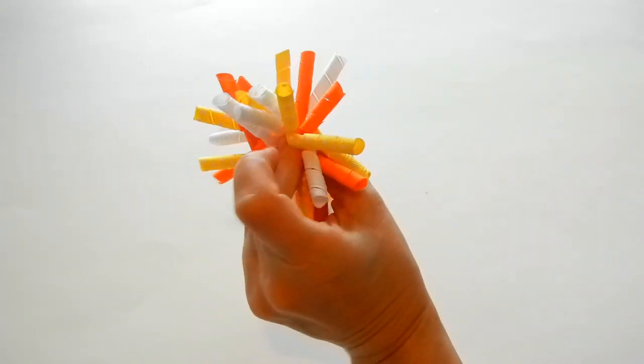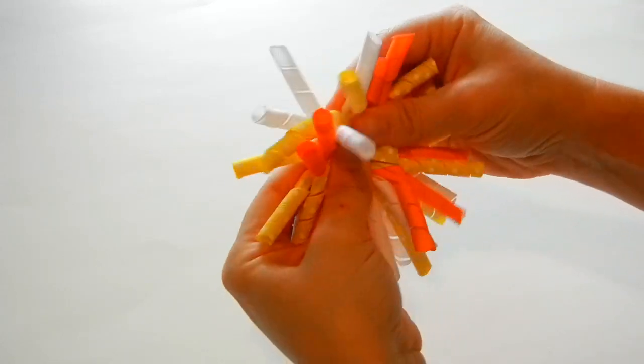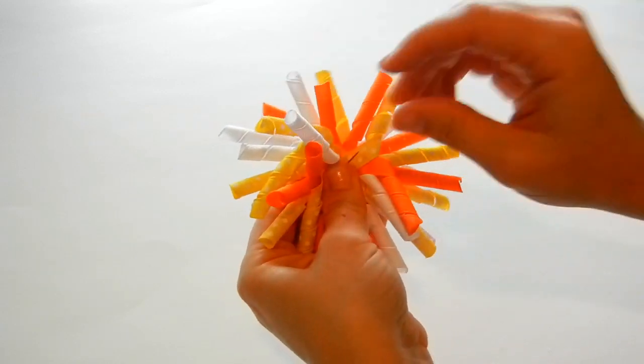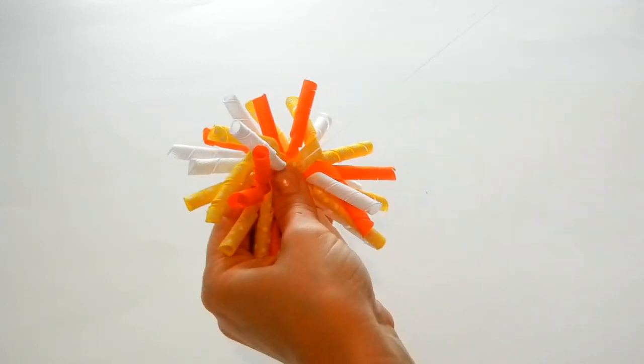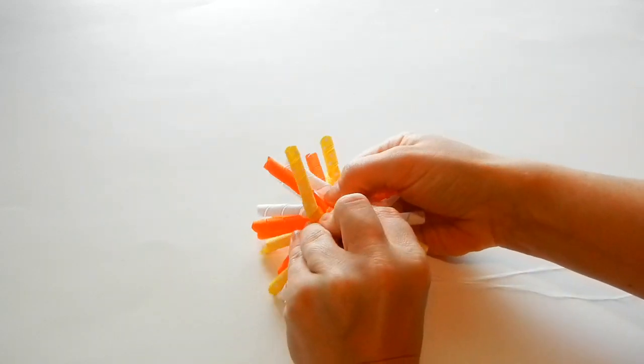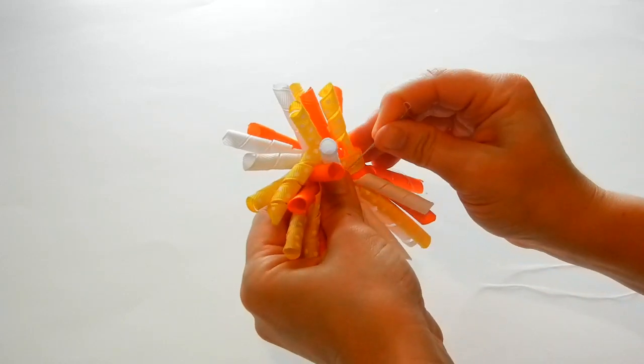Once you have all your corkers on your needle, squish down your corker bow so you can see both sides. Then we're going to pull the needle through and then bring it back through. We want to go through all the ribbon.